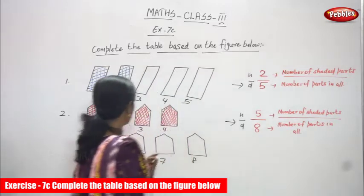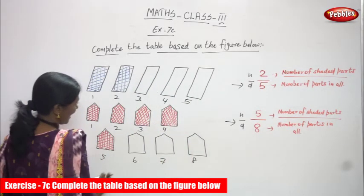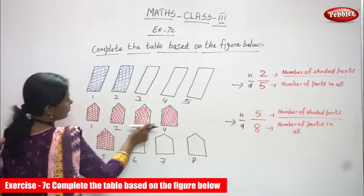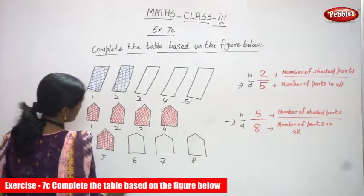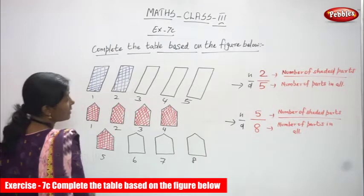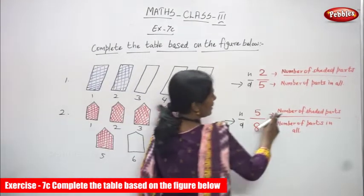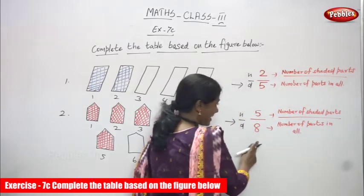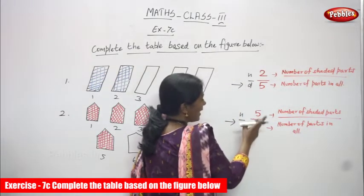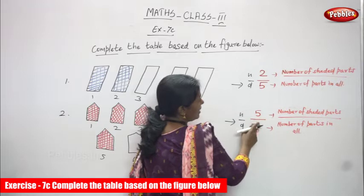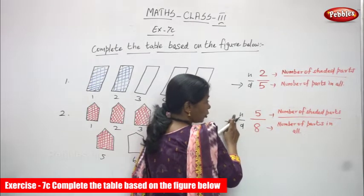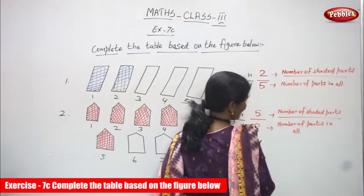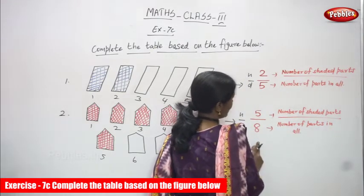Let me repeat once again. Total number of shapes are 8 in the second diagram. I've shaded only 5 shapes. Number of shaded parts is 5, number of parts in all is 8. 8 is the denominator — it's the bottom number — and 5 is the numerator — it's the top number. So, fraction is 5 by 8.